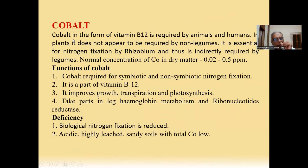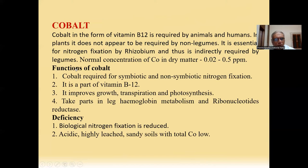First, we look at Cobalt. Cobalt in the form of Vitamin B12 is required by animals and humans. In plants, it does not appear to be required by non-legumes. It is essential for nitrogen fixation by rhizobium and thus it is indirectly required by legumes. Normal concentration of Cobalt in dry matter is 0.02 to 0.5 ppm. Functions of Cobalt: it is required for symbiotic and non-symbiotic nitrogen fixation, it is a part of Vitamin B12, and it improves growth, transpiration and photosynthesis. It also takes part in leg hemoglobin metabolism and ribonucleotides.